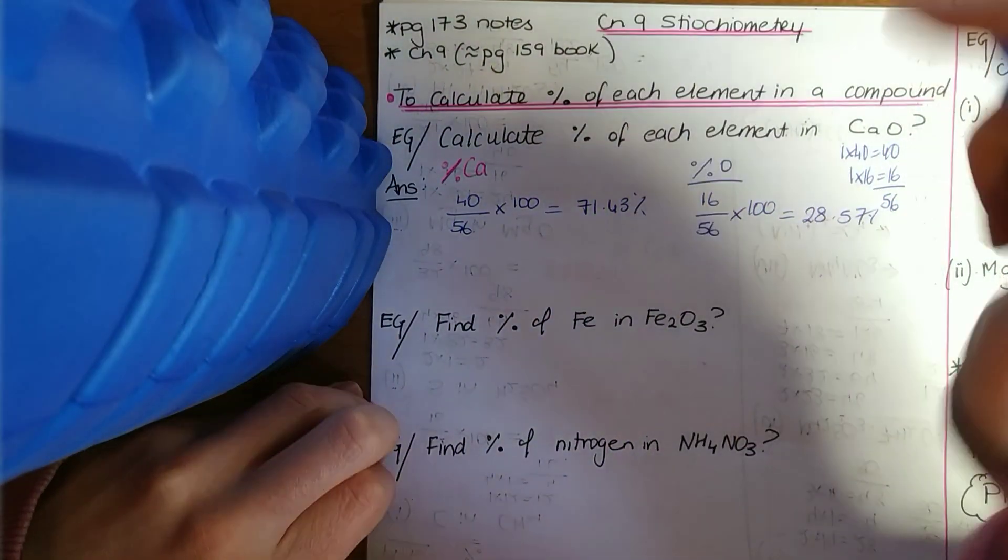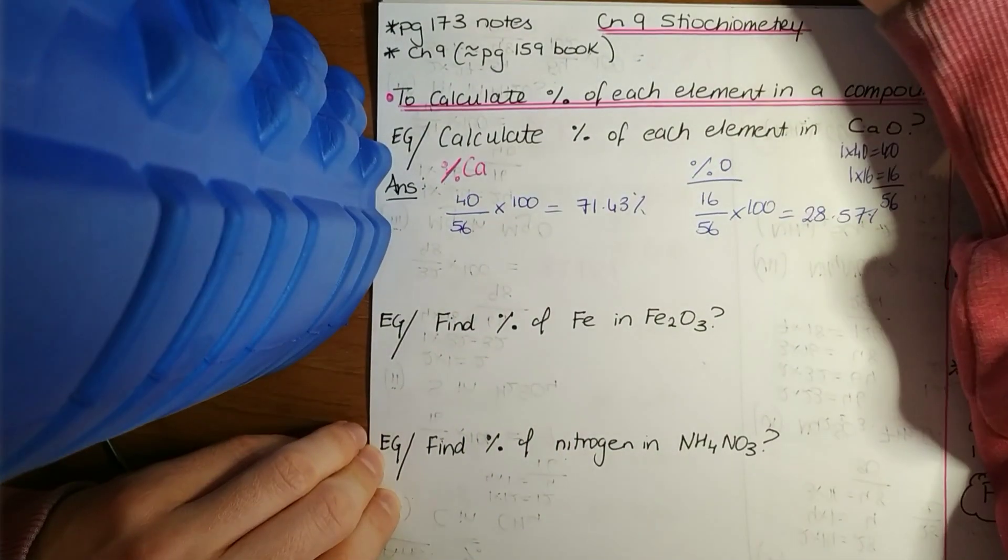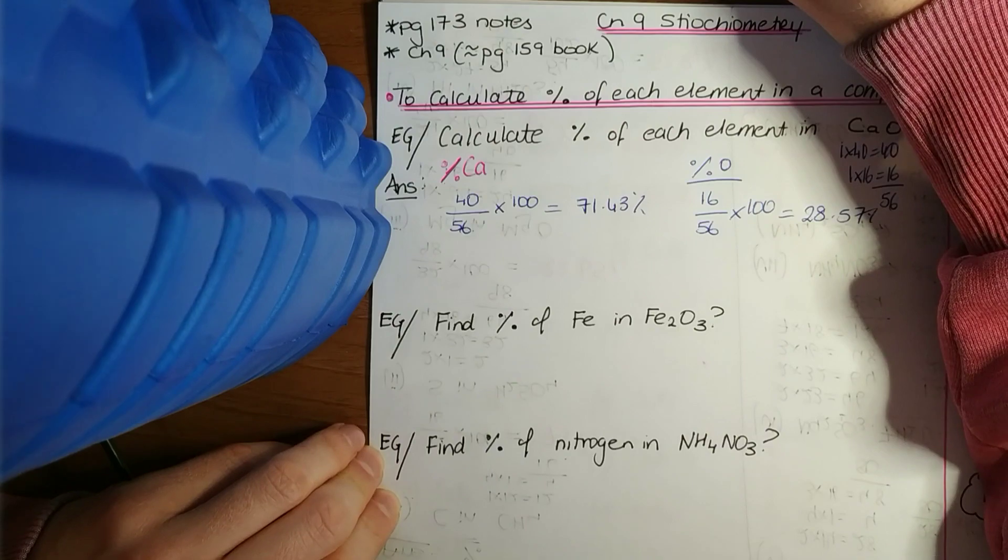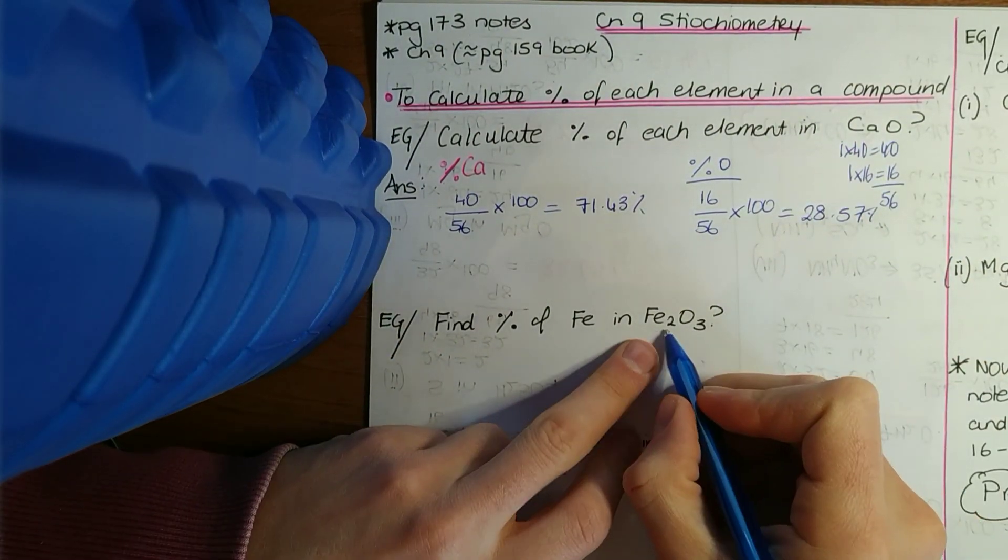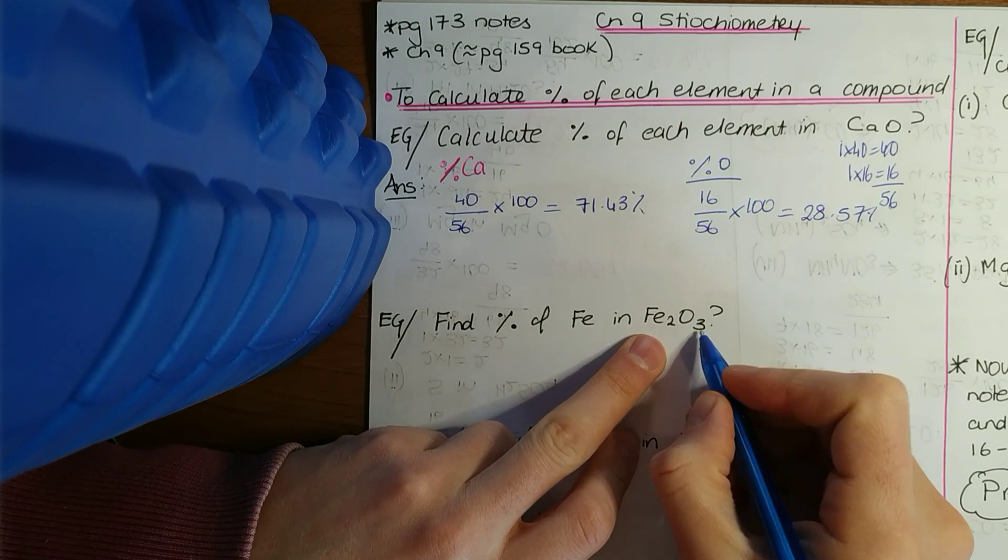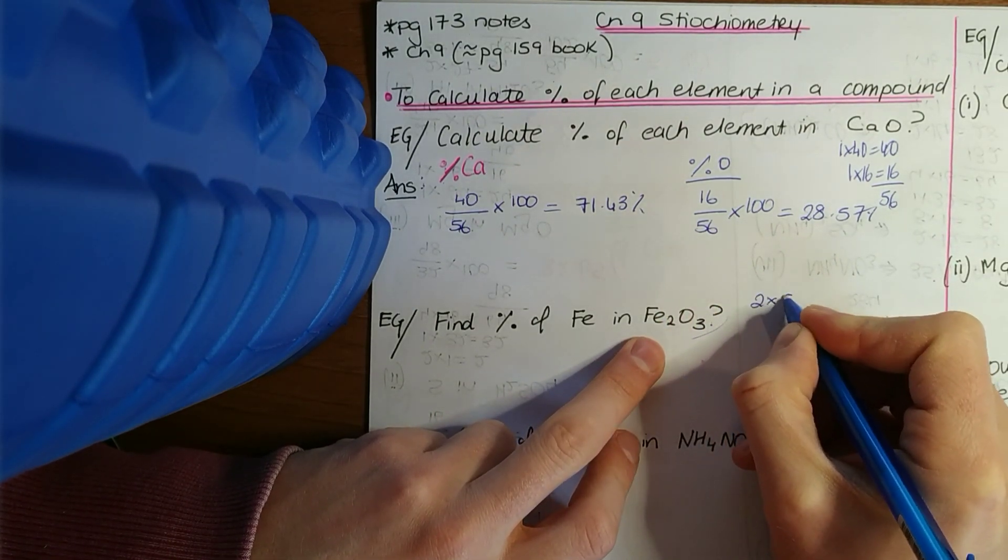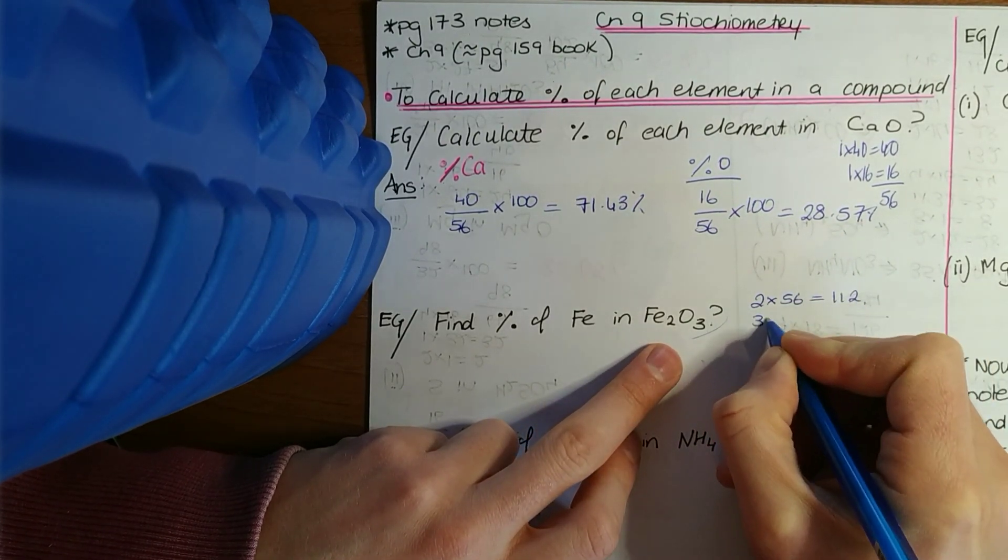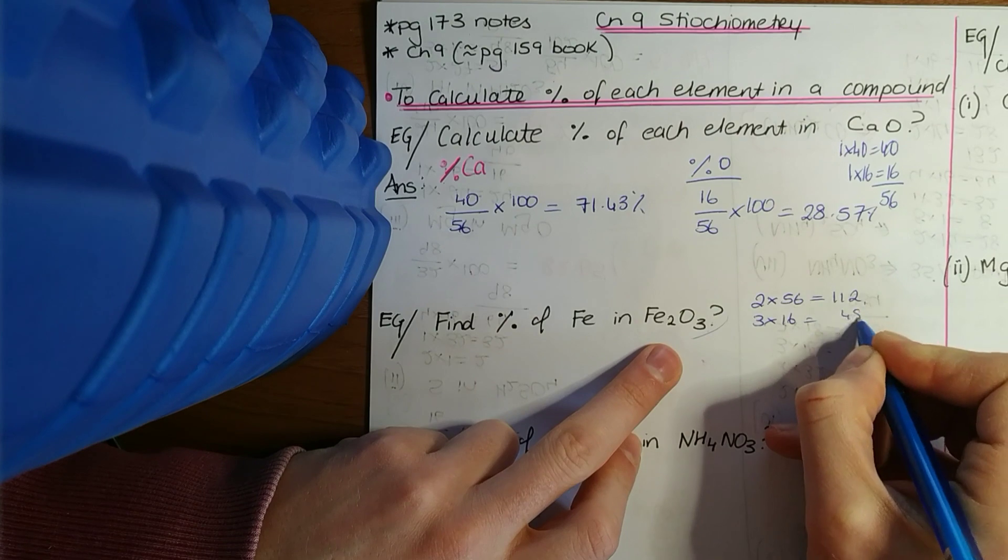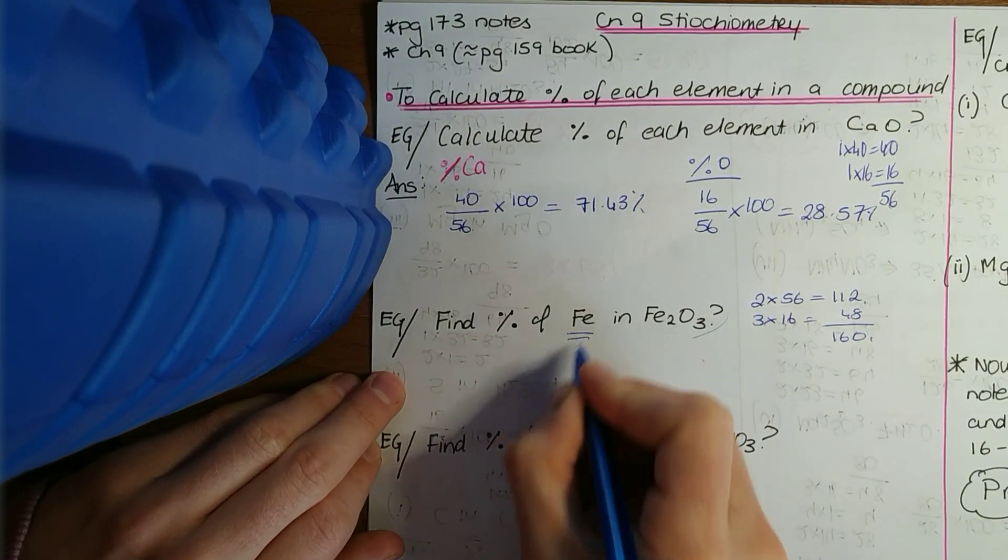Easy. Now next one: find the percentage of iron in iron(III) oxide. So firstly get the total relative molecular mass or the relative molecular mass of this compound. There's two irons, so 2 by 56 is 112.